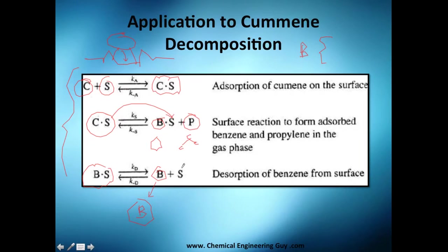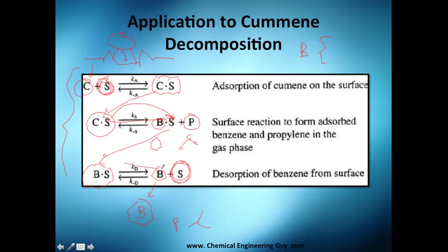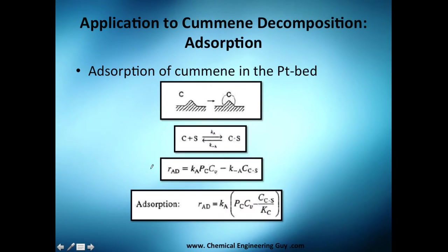Benzene goes out, propylene is already flying everywhere, and the binding site is left alone. Then you start again with Cumene — adsorption, surface reaction, desorption — and you continue with the cycle.